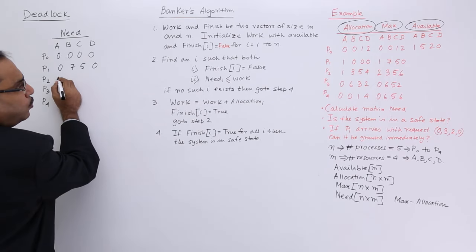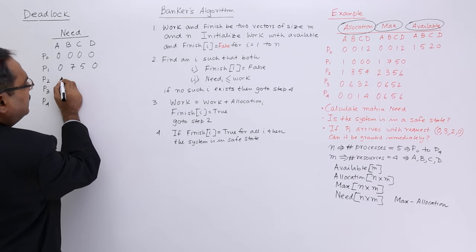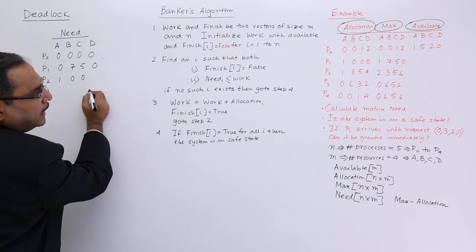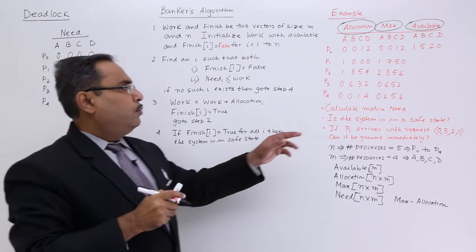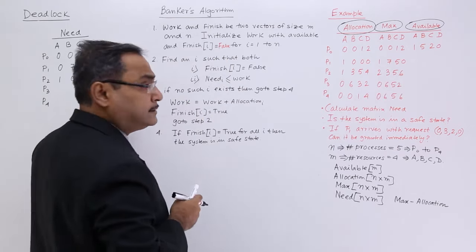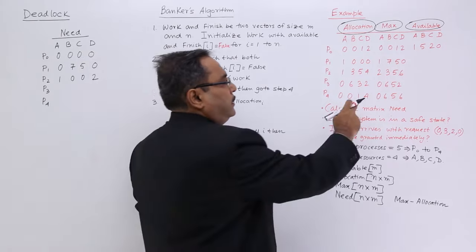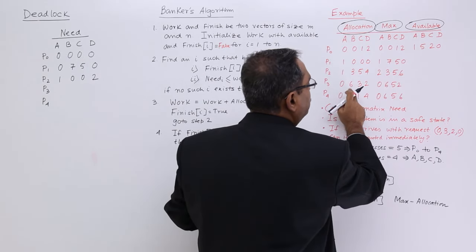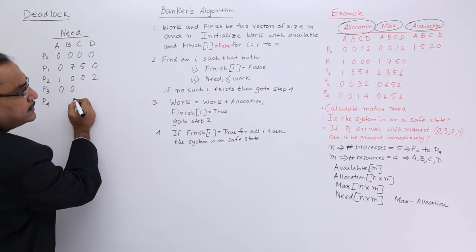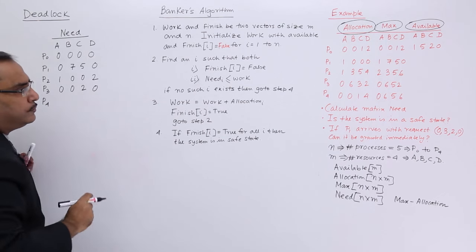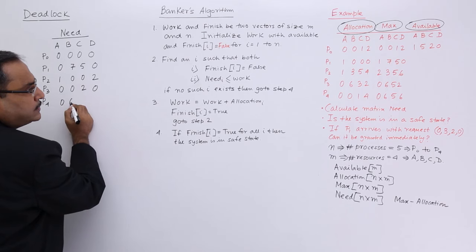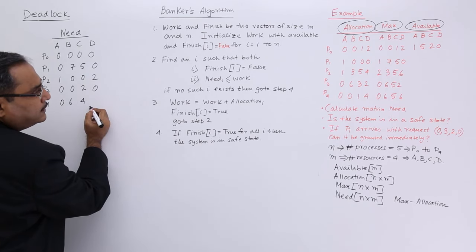So computing need: for P0, max is 0,0,1,2 minus allocation 0,0,1,2 gives 0,0,0,0. For P1, max is 1,7,5,0 minus allocation 1,0,0,0 gives need 0,7,5,0. For P2, max is 2,3,5,6 minus allocation 1,3,5,4 gives 1,0,0,2. For P3, max is 0,6,5,2 minus allocation 0,6,3,2 gives 0,0,2,0. For P4, need is 0,6,5,6 with allocation giving 0,6,4,2.